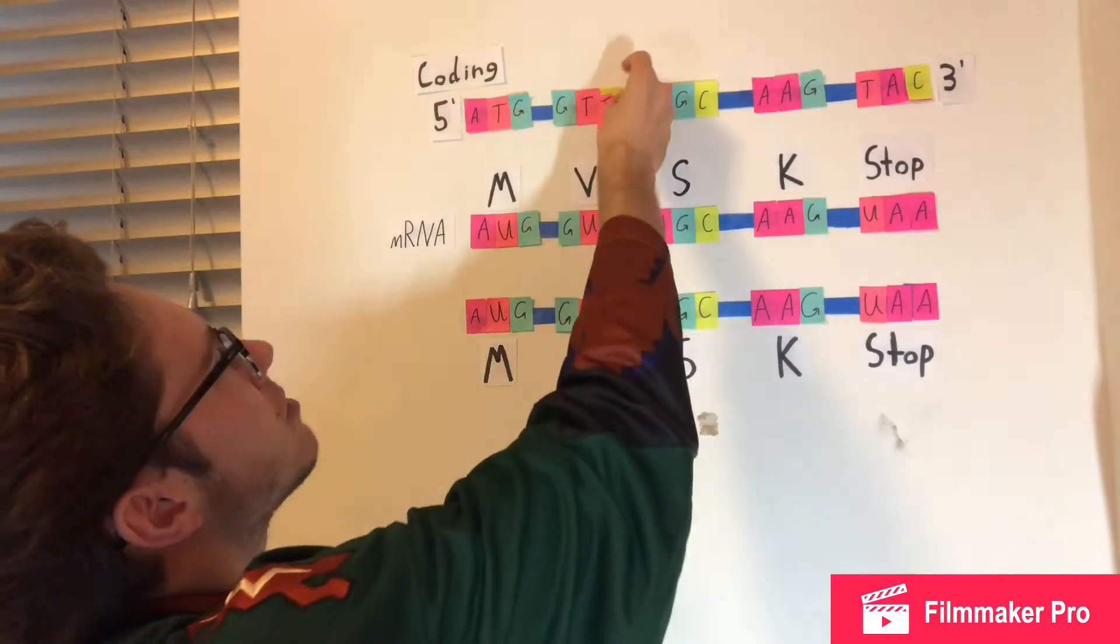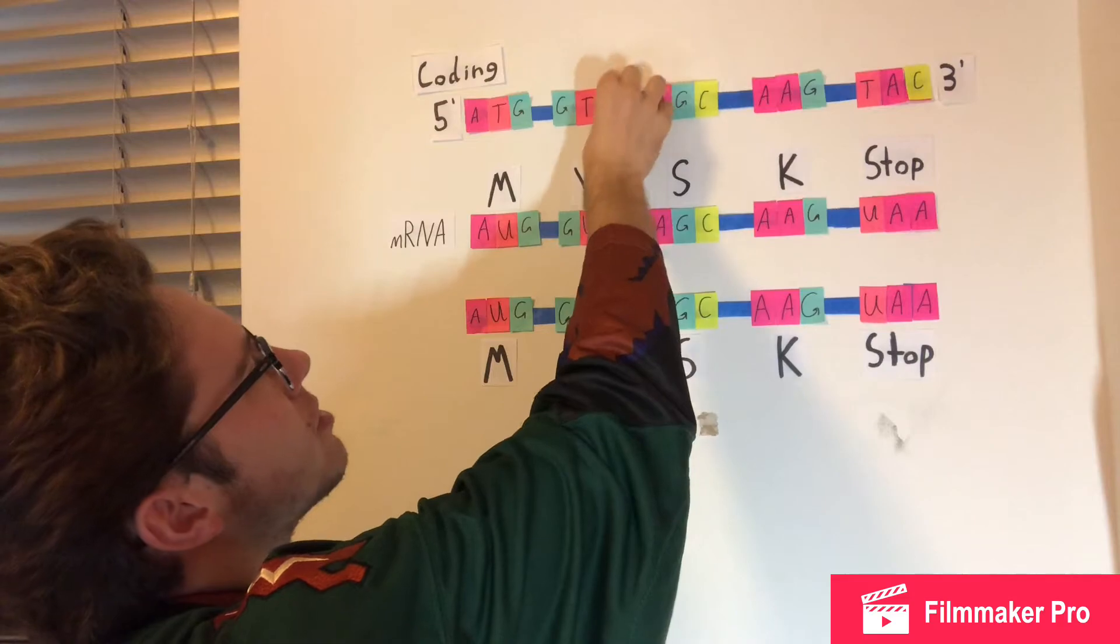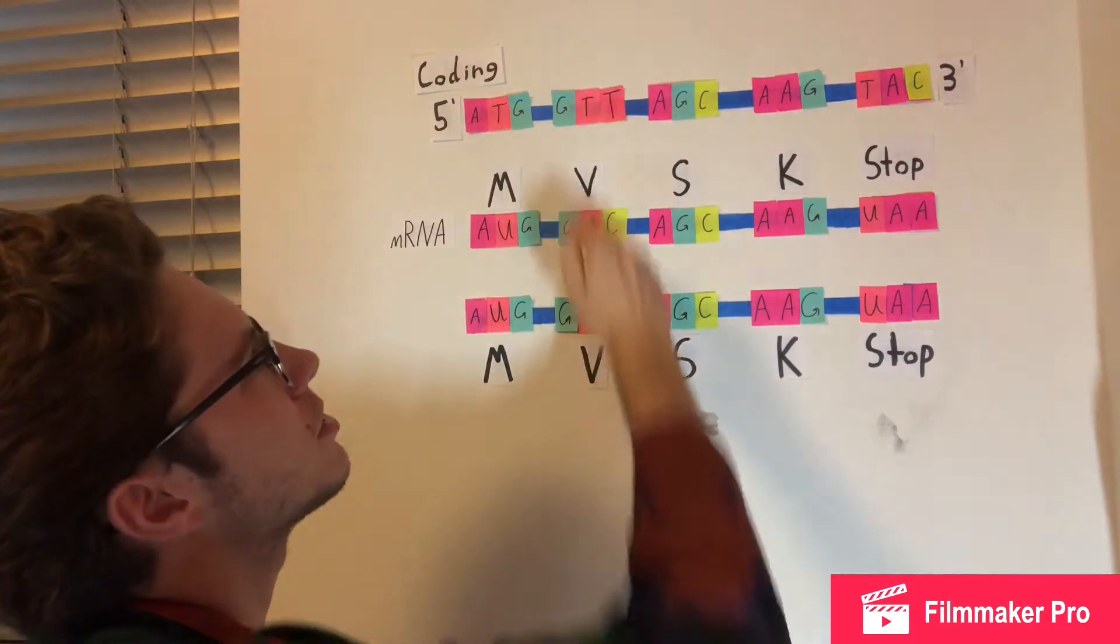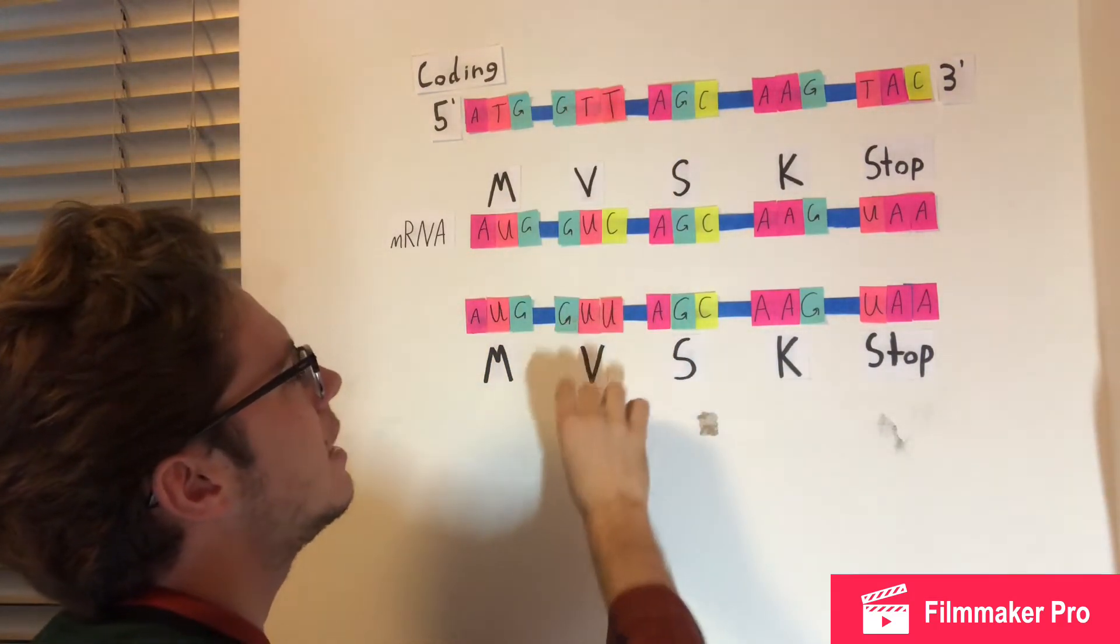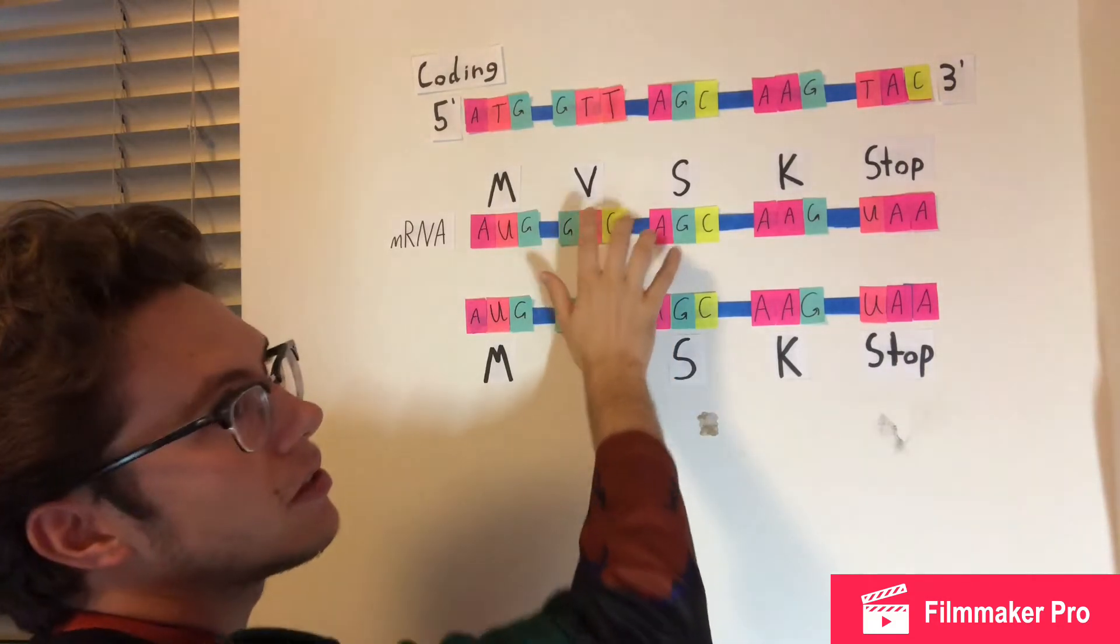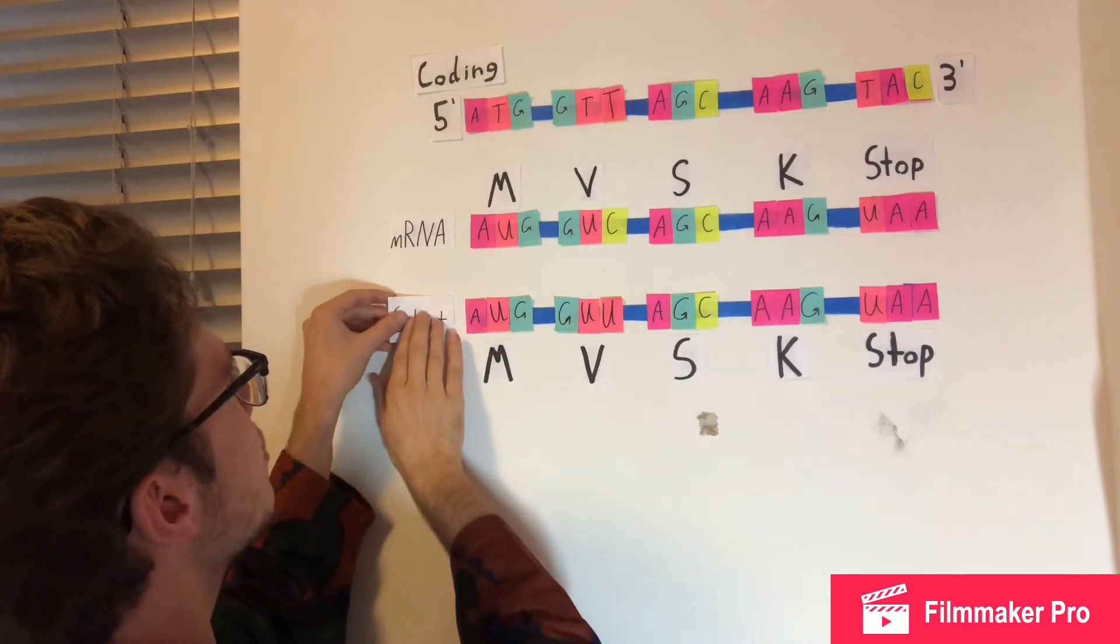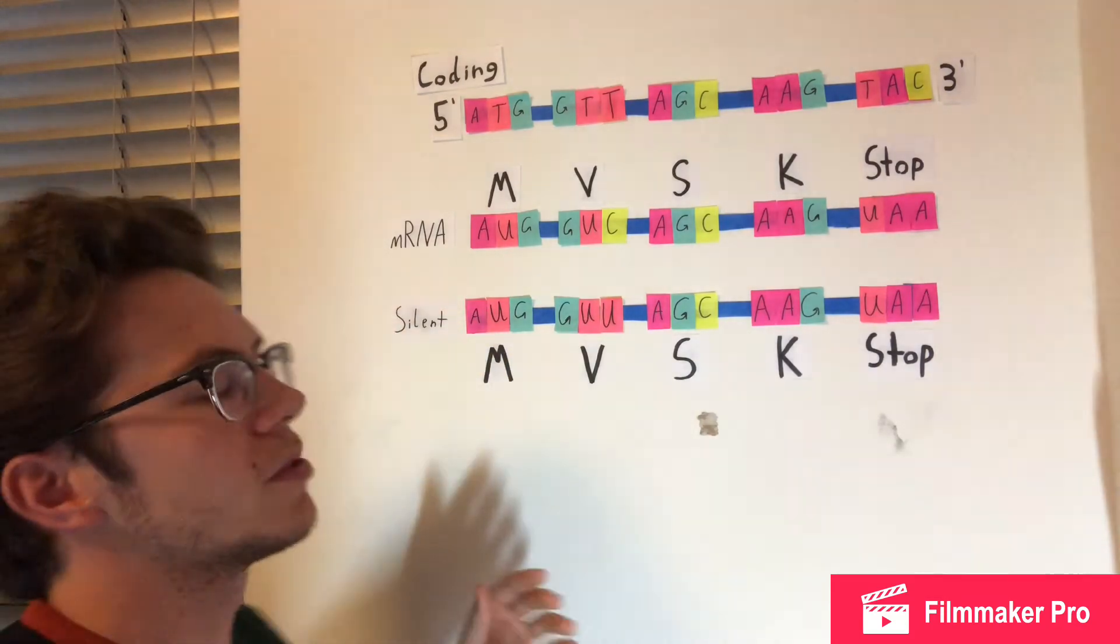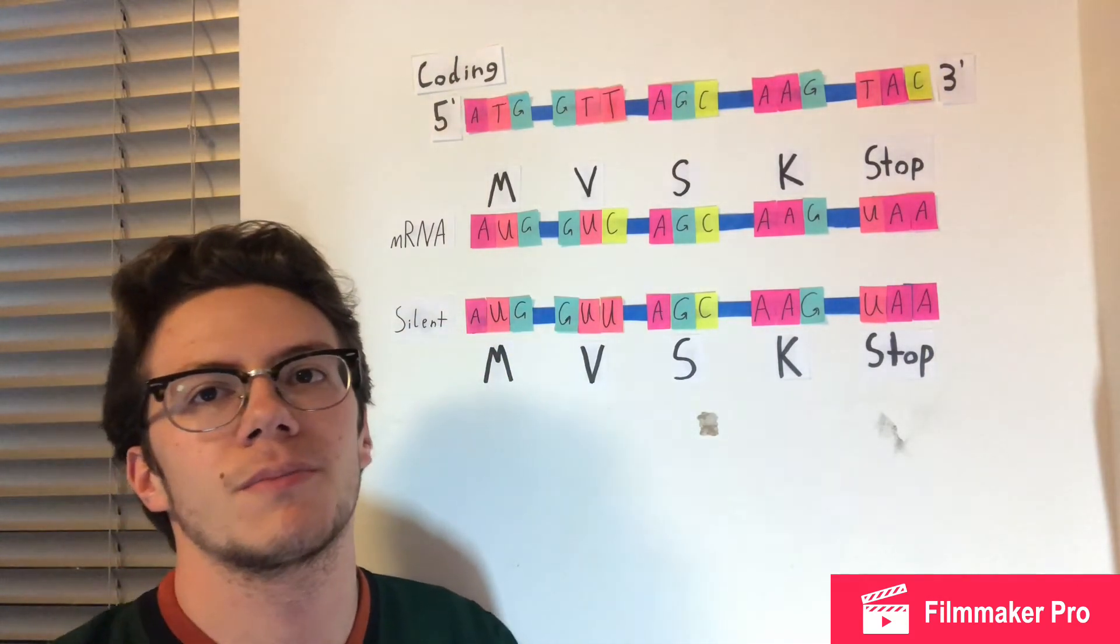Hypothetically, let's say this cytosine in the DNA goes through a transition mutation into a thiamine, which then gets transcribed into a uracil. This GUU amino acid codes for a V, which is the same as our original mRNA. So you would call this mutation a silent mutation, which would result in the Miss Vicky's jalapeno chips.